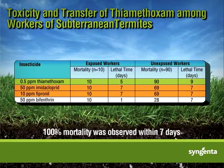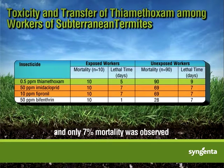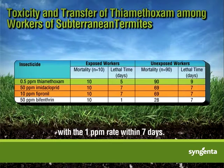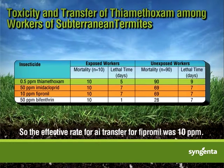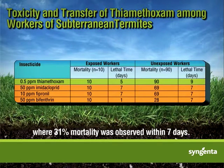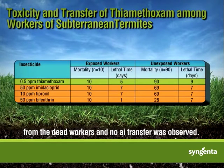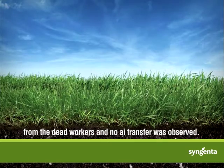In the 50 parts per million fipronil treatment, 100% mortality was observed within 7 days, while 79% mortality was observed at the 10 parts per million rate, and only 7% mortality was observed at 1 part per million within 7 days. The effective rate for AI transfer for fipronil was 10 parts per million. In the bifenthrin treatment, there was a knockdown effect at 50 parts per million where 31% mortality was observed within 7 days. Being a repellent insecticide, the healthy workers were repelled from the dead workers and no AI transfer was observed.